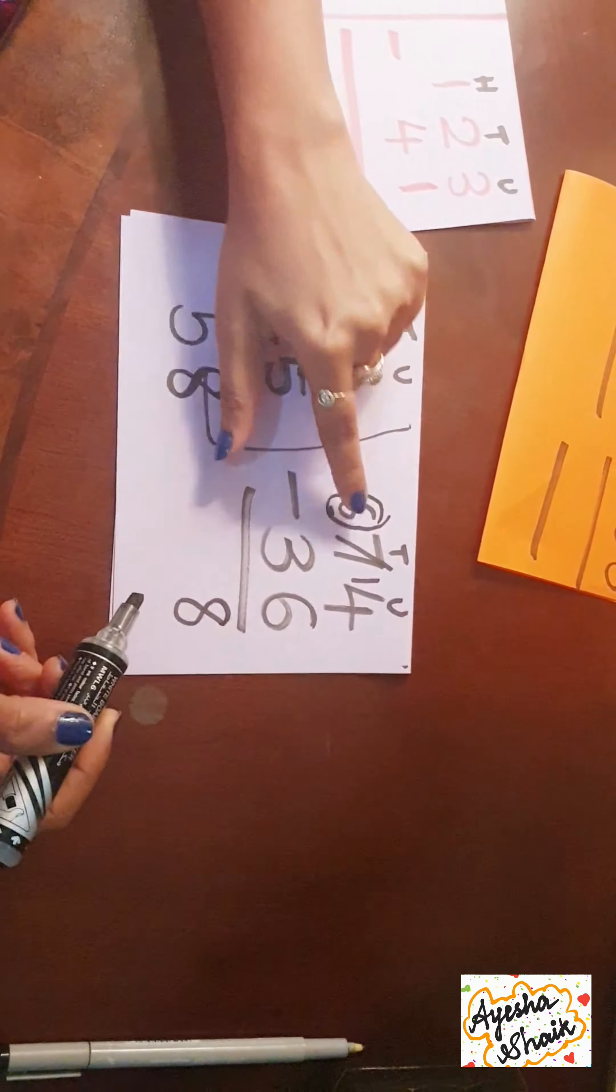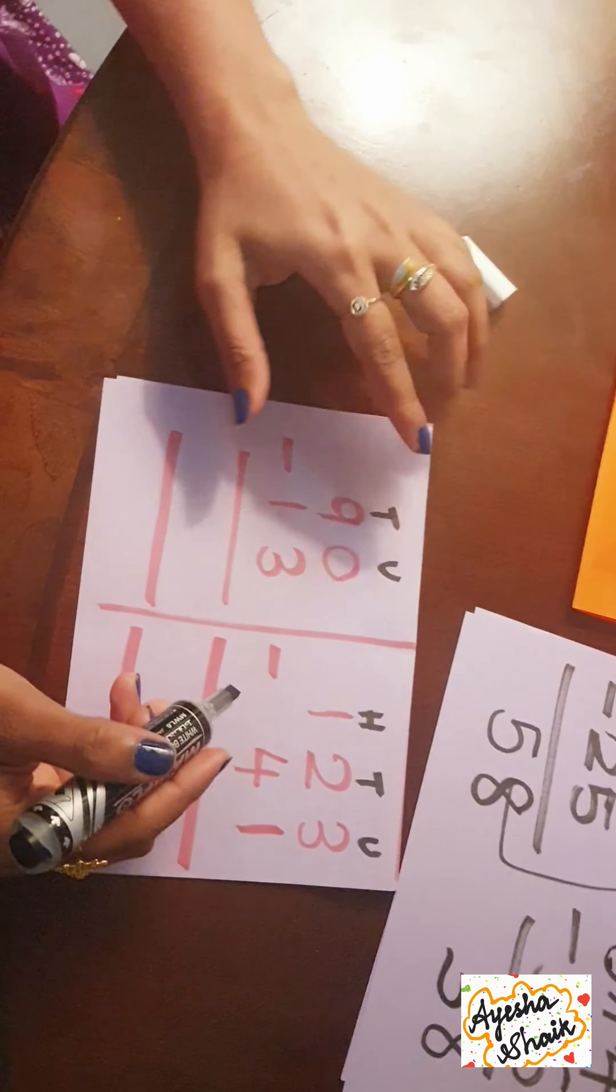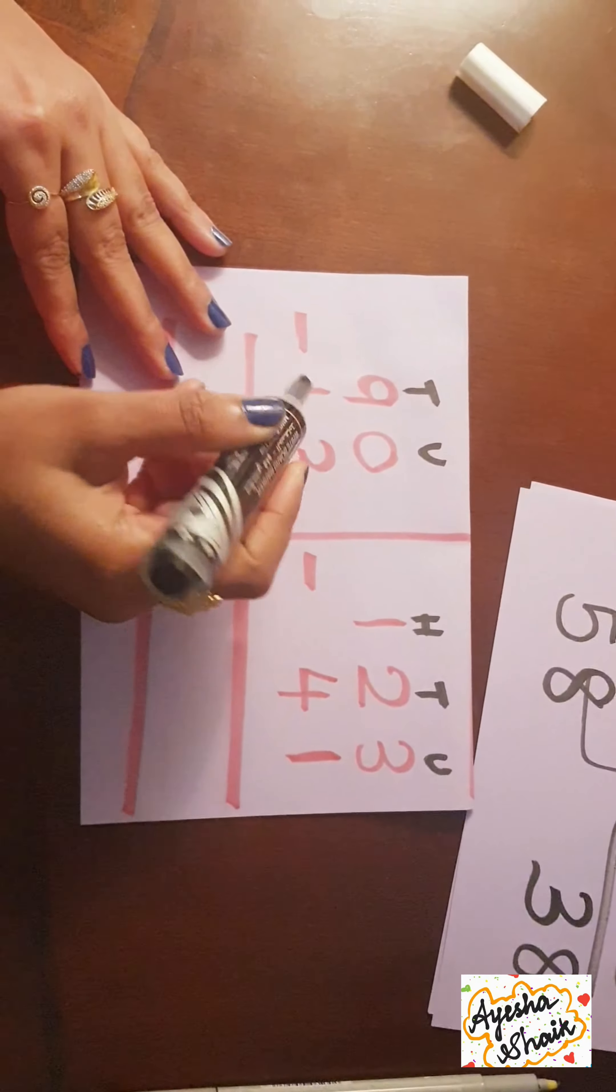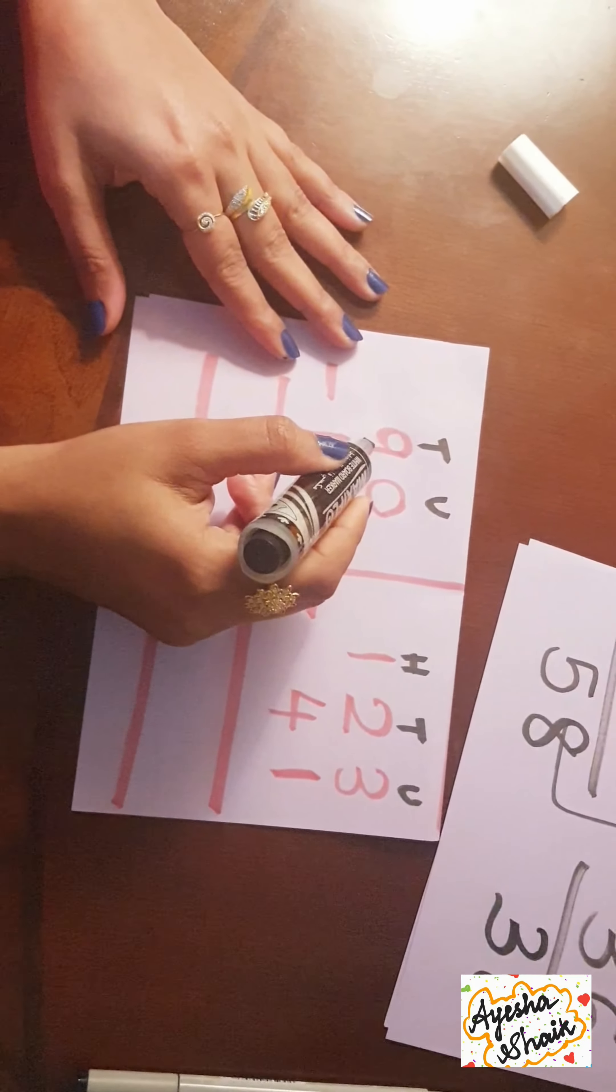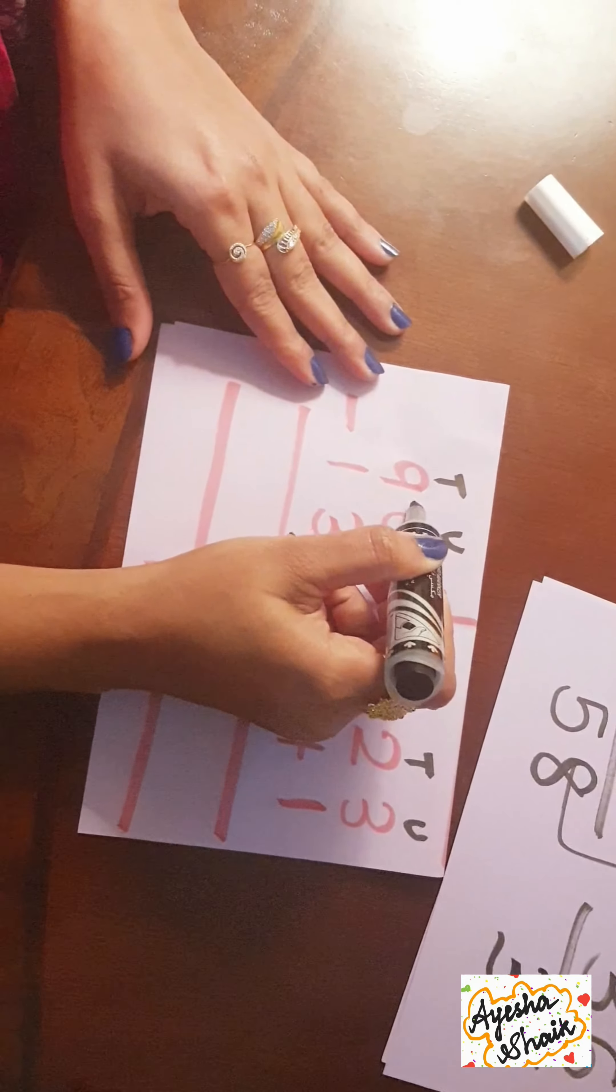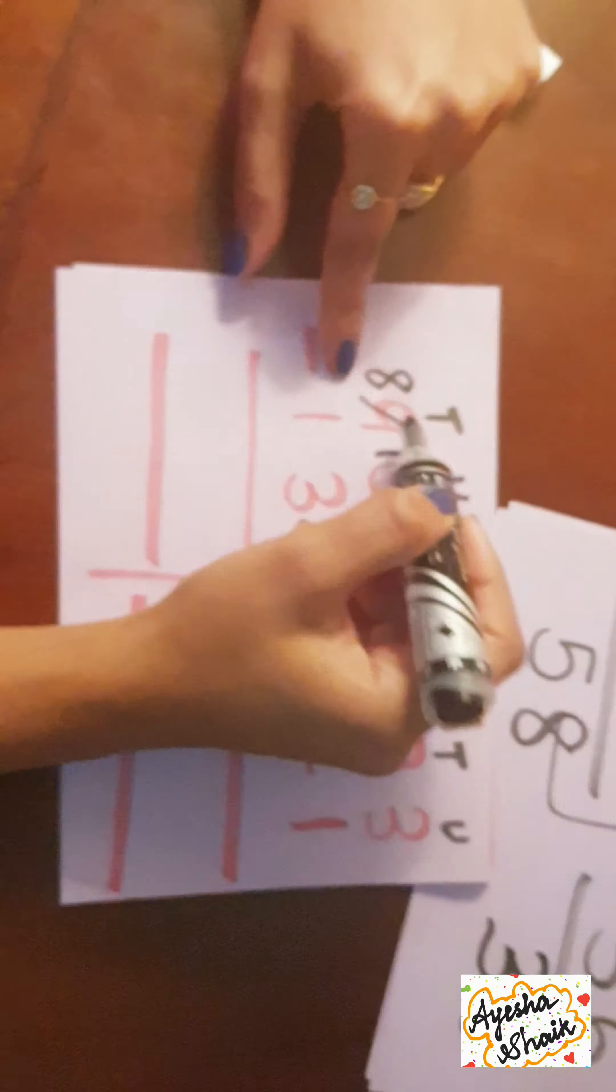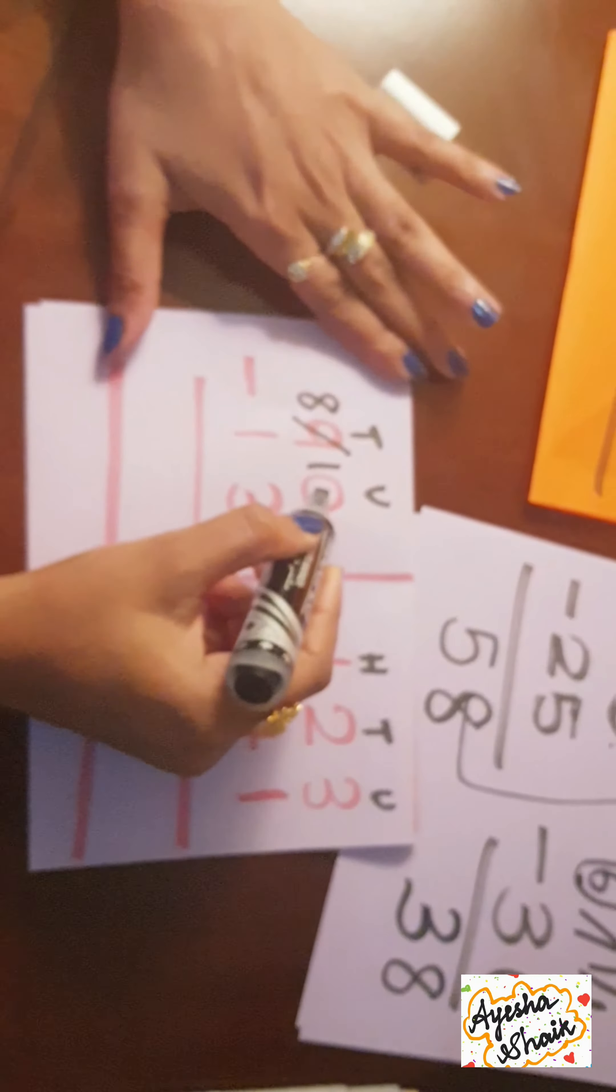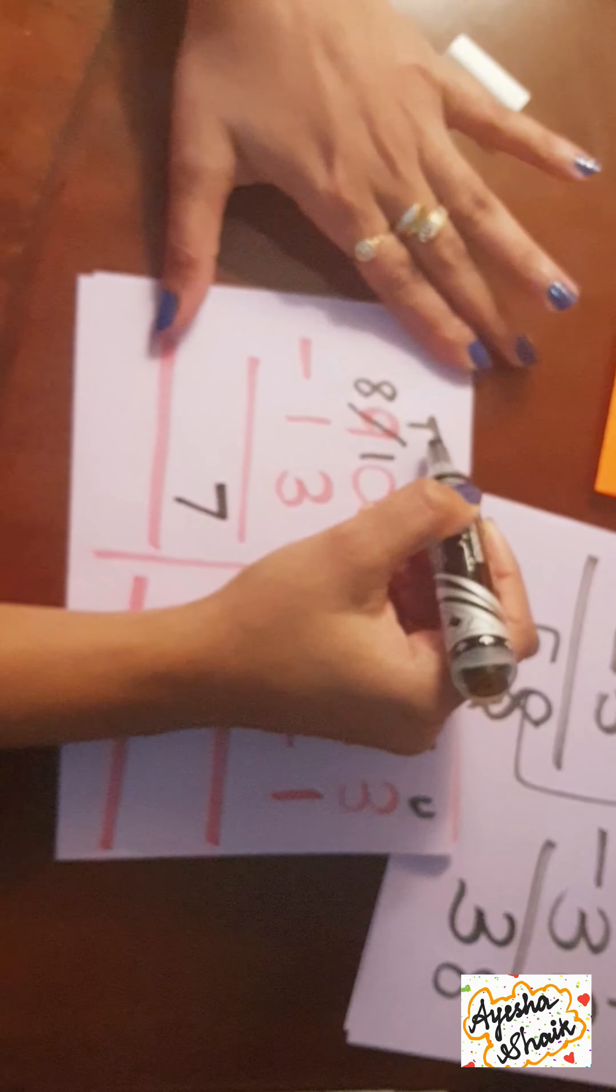We have another example. Let's look at this: zero minus three. Oh, we cannot do that. Again we have to knock Mr. 9's door and ask for one. Knock knock Mr. 9, give me a one. Nine says okay. Zero gets one so it becomes ten. Nine becomes eight because it gave away one to zero. Now ten minus three is seven. Let's look at the tens place: eight minus one becomes seven.